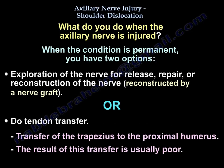You then have two options: exploration of the nerve for release, repair, or reconstruction by nerve graft. Or, you perform a tendon transfer — specifically the transfer of the trapezius to the proximal humerus. The result of the tendon transfer is usually poor.